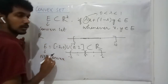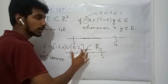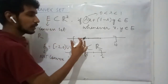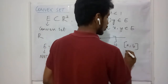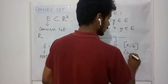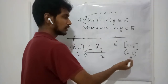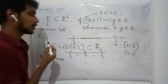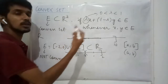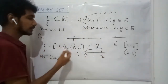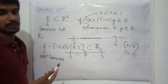These examples might have given you the idea that on the real line, any closed interval or open interval — any kind of interval — is a convex set. Other than this, the disjoint union of intervals is not convex.